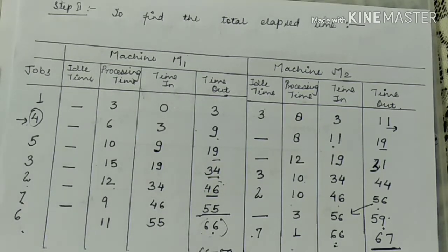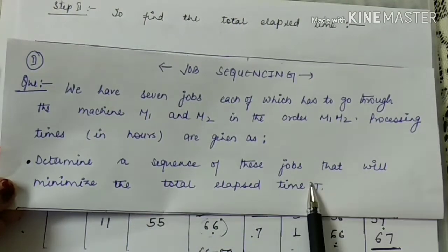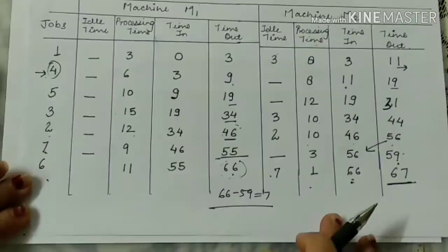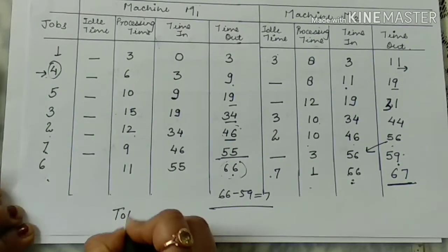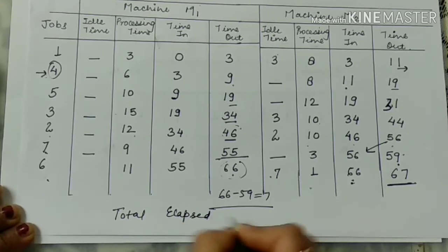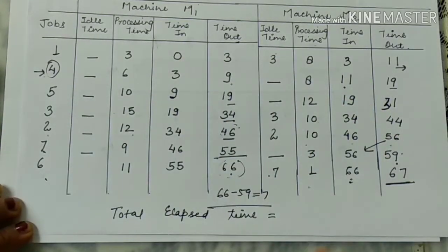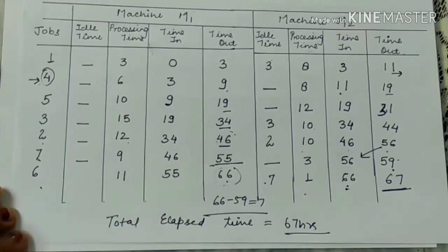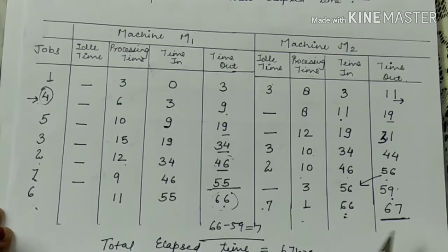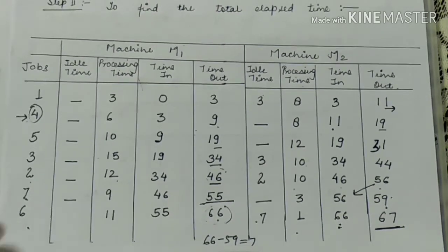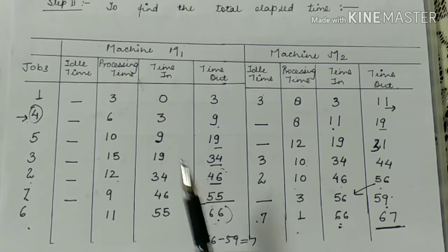The total elapsed time is 67 hours — this is what was asked in the question. Machine starts work at time 0 and finishes at 67 hours. This question is very important and has appeared in exams like IAS and BTEC, so please carefully understand and read it. If you have any queries, post them below in the comment box.